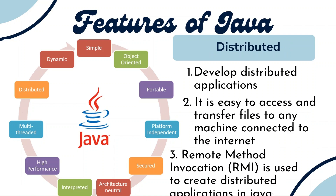Then distributed: we can develop distributed and internet applications, as well as enterprise applications, using Java. It is easy to access and transfer files to any machine connected to the internet. Remote Method Invocation (RMI) is used to create distributed Java applications. With RMI, the methods you need to invoke may not be available on your own system but are available on some other remote system. You can still invoke those methods, the execution is done on the remote system, and the output is sent back to you — that is called RMI technology, which is part of Java.